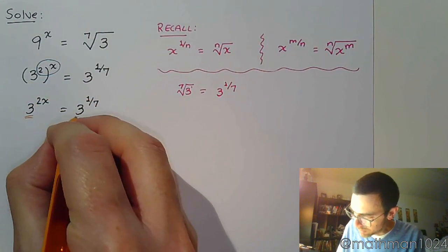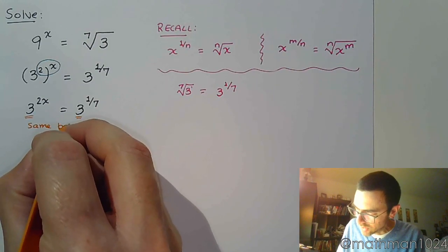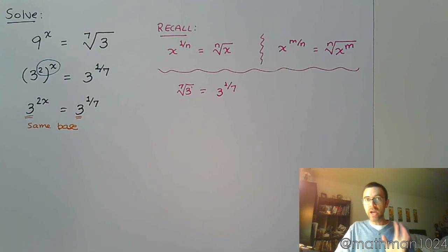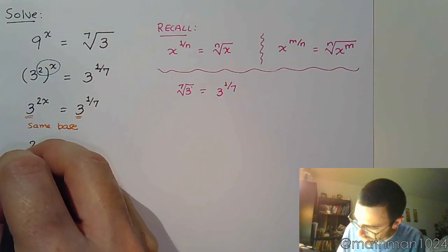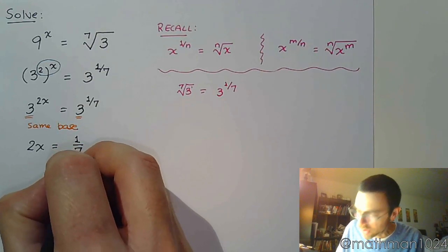Well, now we have the same base, which is a requirement for us to set the powers equal to each other. And right now, this is going to be what we do. We find the common base. We rewrite the left and right sides so that you have the same base and you equate the powers by saying 2x is equal to 1 over 7.